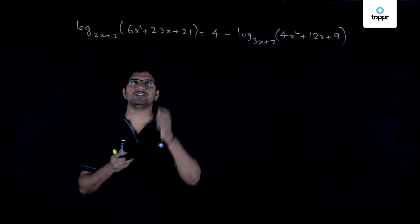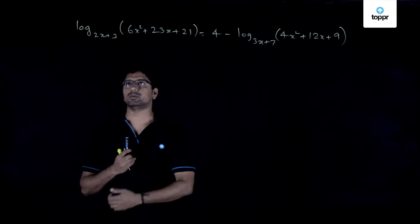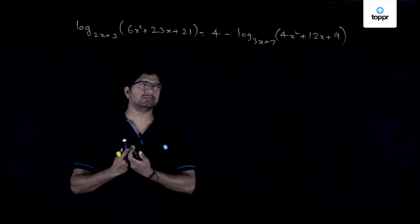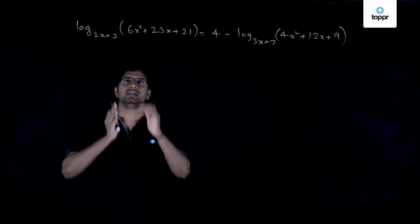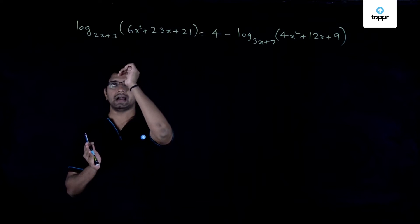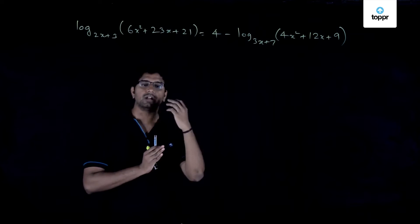Coming to a very interesting problem which involves the concept of quadratic equations along with that of logarithms. We are given an equation - it is actually a logarithmic equation - and further the terms as well as the base involve the unknown variable x.